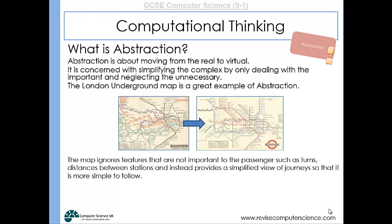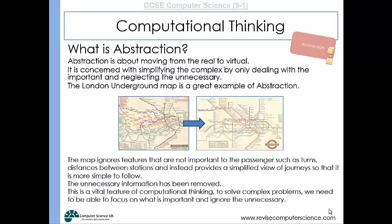So the map, the new map, ignores features that aren't important to passengers such as the distance between stations. It provides a simplified view of the journey so it's easier to follow. Unnecessary information has been removed. And this is a really important feature of computational thinking: if you're going to solve really difficult problems, really complex problems, you have to be able to focus on what's important and ignore the unnecessary details.